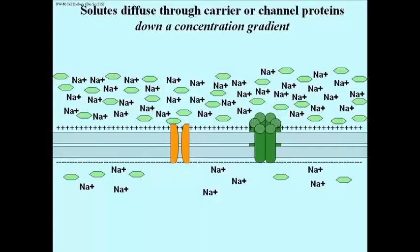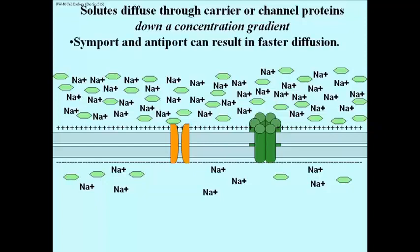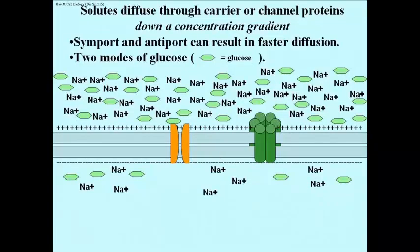So solutes again diffuse through carrier or channel proteins always down a concentration gradient. Symport and antiport that we've just seen can result in faster diffusion. There are two modes of glucose transport: through the glucose transporter which I showed you a moment ago, or sodium ion enhanced glucose transport. So let's take a look at these.